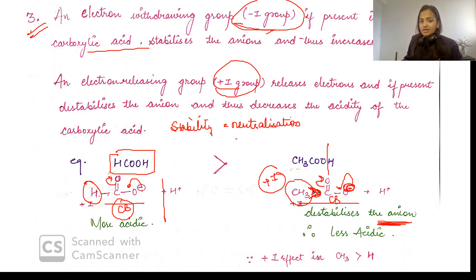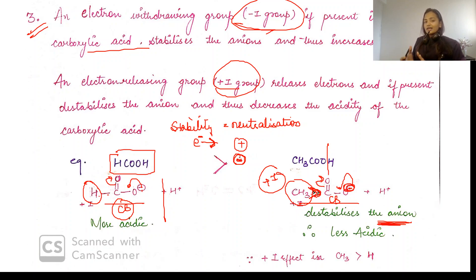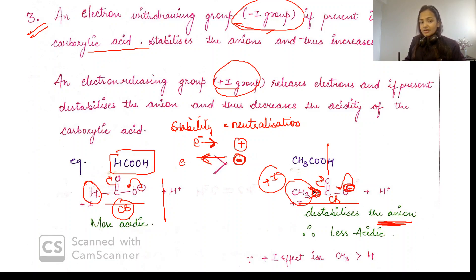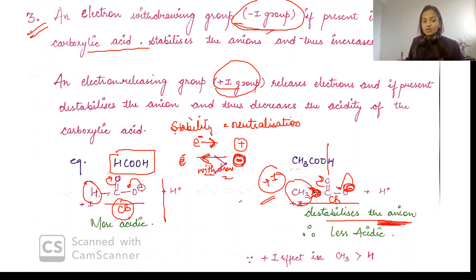Stability means neutralization. If you have a positive charge and you give electrons, it will be stable. If you have a negative charge, it is already electron-rich — if you give more electrons, it is destabilized. For stability with a negative charge, we need electron withdrawal. Withdrawing stabilizes the anion, so that will be more acidic.